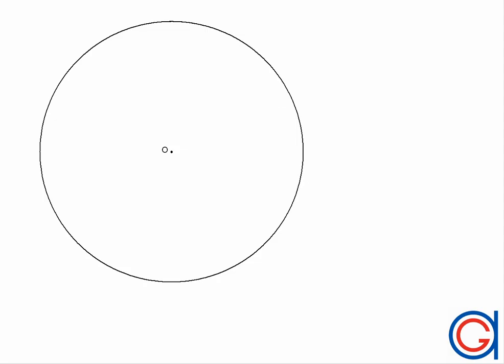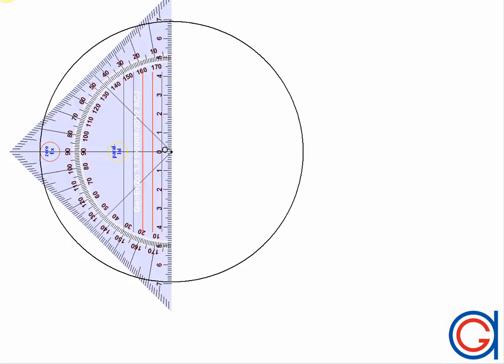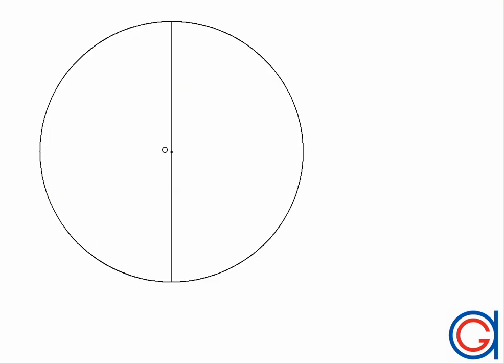Hello. Let's apply the general method to draw regular polygons inscribed in circumferences or circles. The first step we must do is to draw a vertical diameter. This vertical diameter will intersect our circumference at two points A and P, as shown.